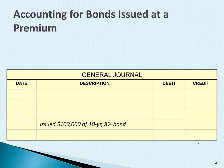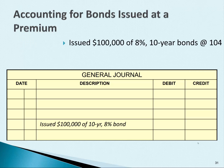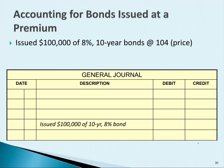Now we're going to issue bonds at a premium, which means we receive more than $1,000 for each bond, probably because our bonds are paying a high interest rate. In this example, we issue or sell $100,000 of 8% 10-year bonds at 104. The 104 is the price — it means we sold the bonds at 104% of maturity value.